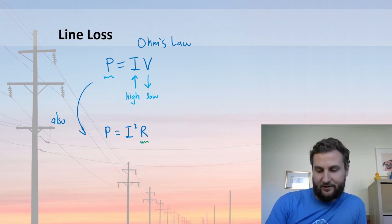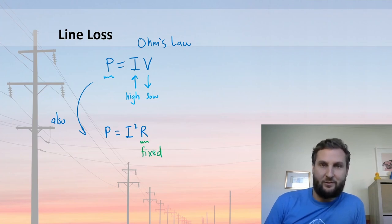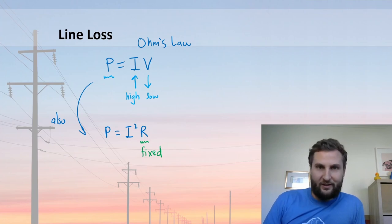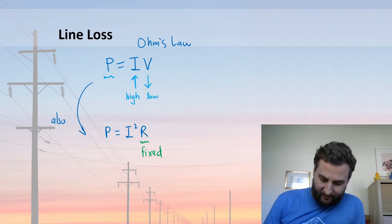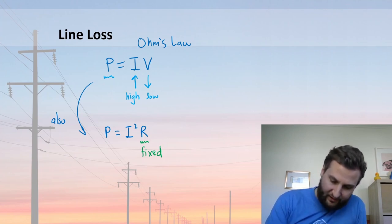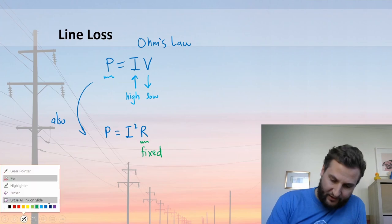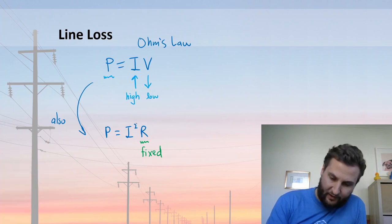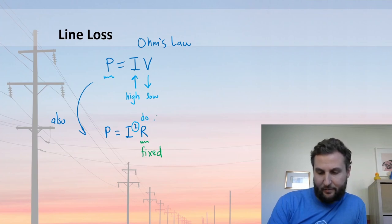Now resistance, this one is basically fixed. We can't do much about resistance without changing the materials or shortening the distance somehow, but if you're transmitting power long distances that's not possible. But what we see here is that current actually dominates in a squared proportion. So this dominates the power equation.